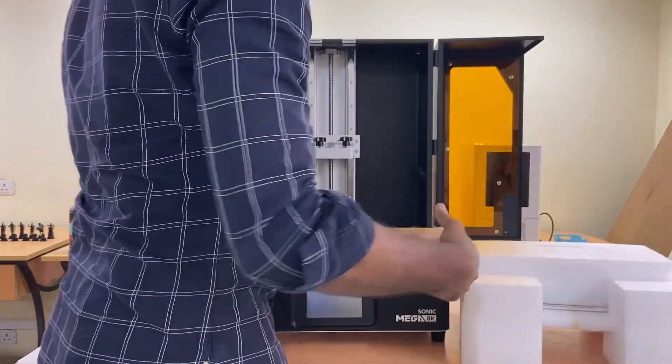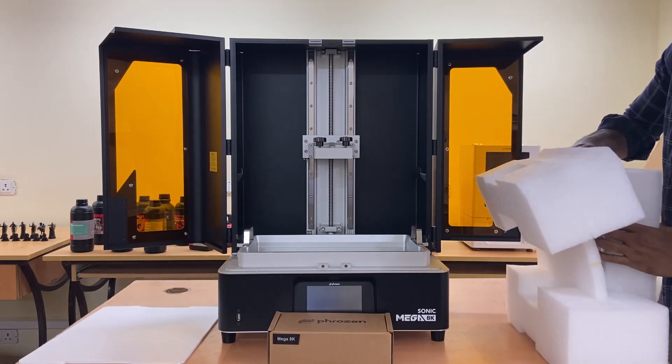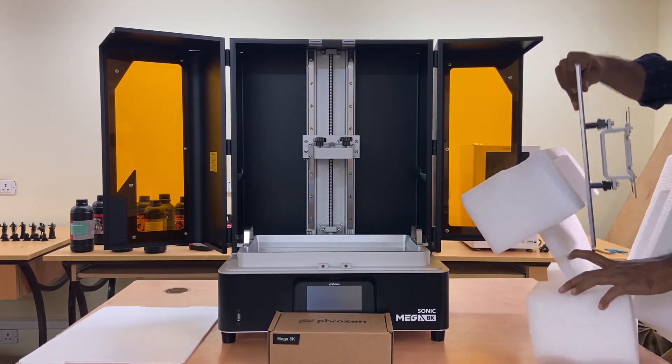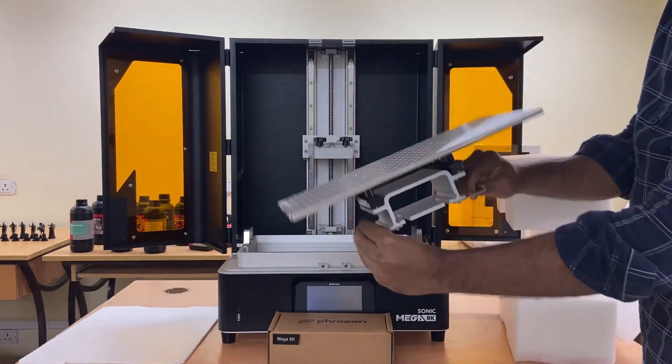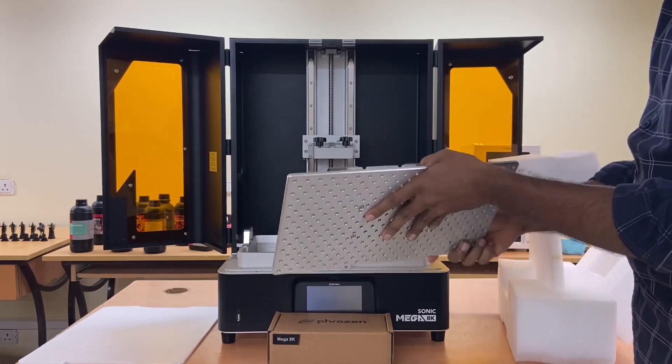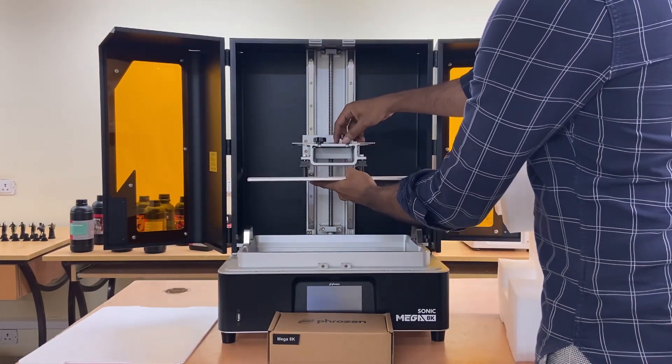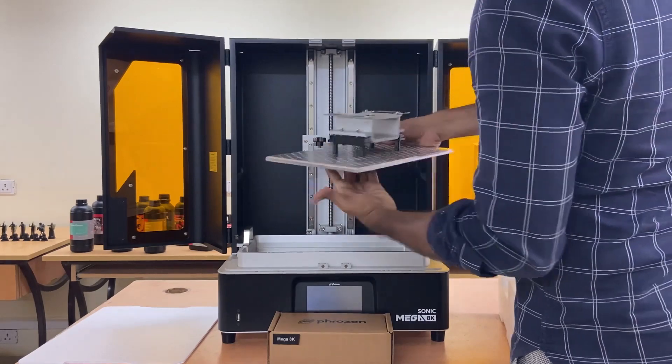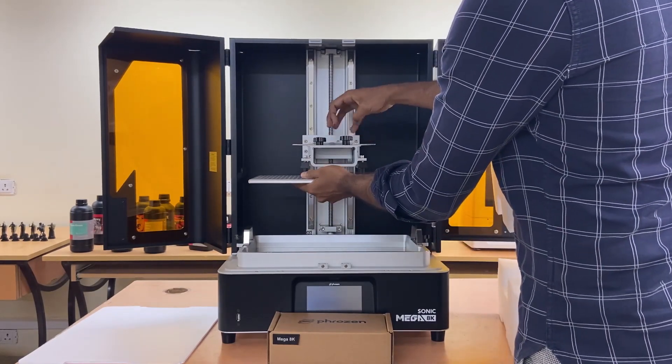With a 40cm tall Z-axis, 33cm in X-axis and 18.5cm in Y-axis, Sonic Mega 8K comes with the largest printing area, enabling you to print out significantly larger models in one sitting.